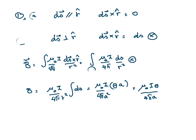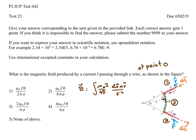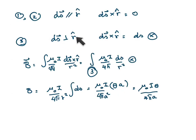What we have to do is calculate the contribution from part three — the curved segment. On part three, ds points along the tangential direction of the wire. This ds is perpendicular to the unit vector r-hat, which points from ds toward point O in the radial direction. Since the wire here is part of a circle, the tangential direction is perpendicular to the radial direction.